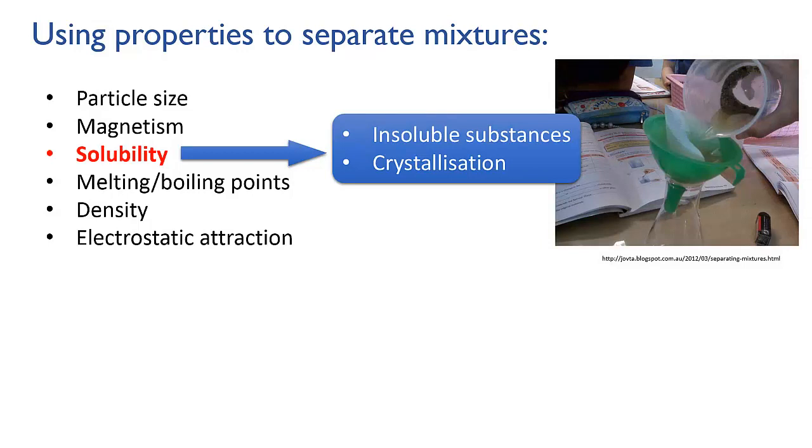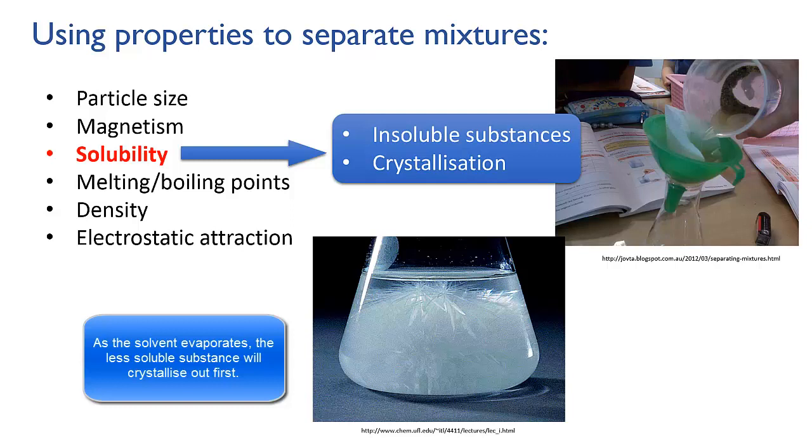But solubility can be used in more subtle ways. For instance, if you have two substances that have different solubilities, one is more soluble than the other, then it's possible to carefully control the evaporation of the solvent in which they're dissolved so that one substance crystallizes out before the other one does.